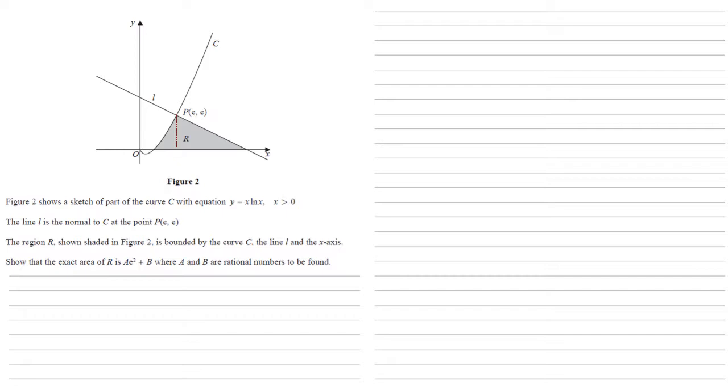We can quickly see that the height is going to be e because that is the y-coordinate at P. But to work out its width, we're going to need to know where our red line meets the x-axis. That's quite easy. That's just e because it's coming down from P. And we need to know where L meets the x-axis on the right-hand side of our picture. To do that, we're going to need the equation of L.